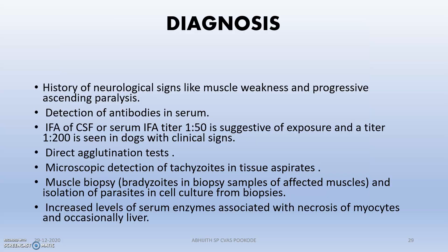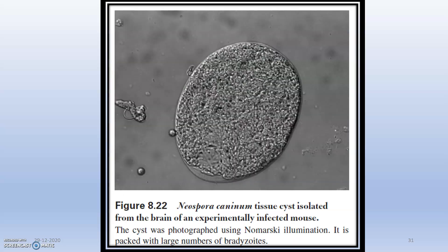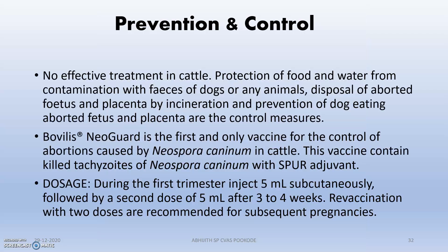Diagnosis is based on neurological signs, detection of antibodies, or the agglutination test. A cross-section of tissue infected with Neospora caninum can also be examined. Prevention and control involves controlling dogs on cattle farms — removing dogs from cattle farms and controlling access to placentas. There is no effective treatment in cattle, but a vaccine called Bovilis NeoGuard can be used.